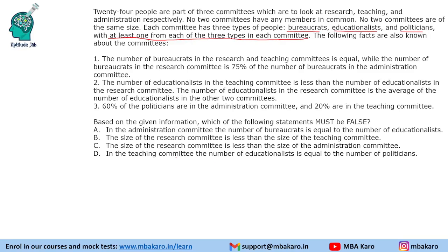So we have to make a table like this. We have three committees — research, teaching and administration — and they will have three types of people: bureaucrats, educationalists and politicians. Minimum one will come in each of these values, so we cannot have a value as zero.